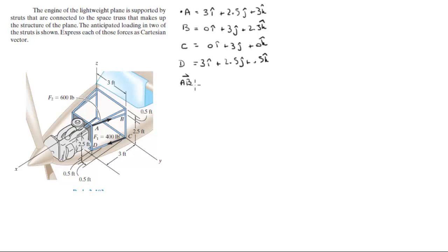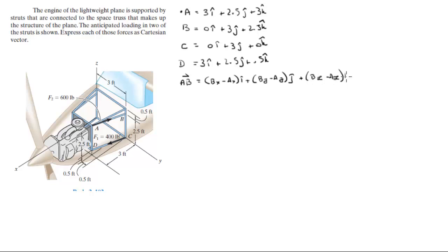Now let's find vector A to B. That vector is calculated as Bx minus Ax in the i, plus By minus Ay in the j. When you plug the numbers in, you get negative 3i plus 0.5j minus 0.5k. This is vector AB.